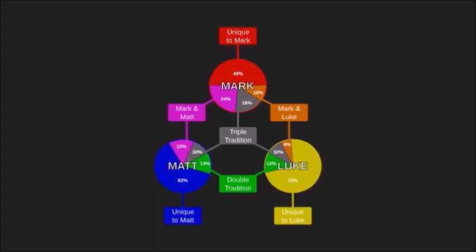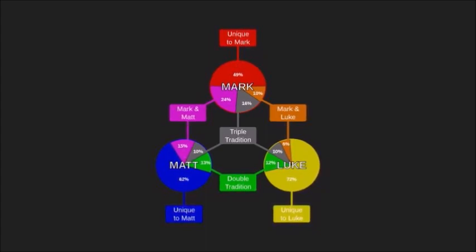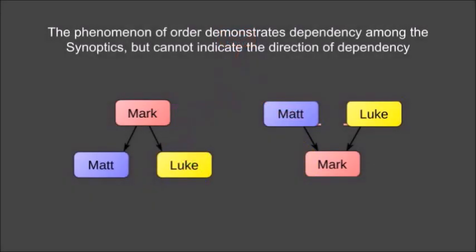This argument proved persuasive to many scholars, and indeed it proved instrumental in turning the tide of scholarship in favor of Markan Priority. In reality, however, the argument does nothing more than to establish that Mark is the middle term between Matthew and Luke. Either Matthew and Luke have chosen to follow Mark's order, except for when they disagree with him, or else Mark has chosen to follow Matthew's order in some instances and Luke's order in others. In short, the argument demonstrates that dependency exists among the three synoptics, and that Mark has to be either first or last.